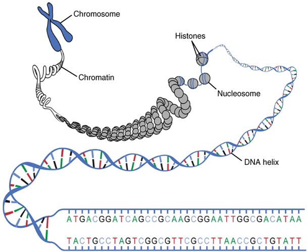== Prefixes and suffixes == A string S is said to be a prefix of T if there exists a string U such that T = SU. If U is nonempty, S is said to be a proper prefix of T. Symmetrically, a string S is said to be a suffix of T if there exists a string U such that T = US. If U is nonempty, S is said to be a proper suffix of T. Suffixes and prefixes are substrings of T, and both relations 'is a prefix of' and 'is a suffix of' are prefix orders.